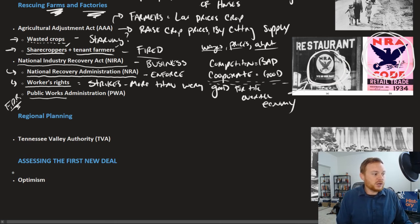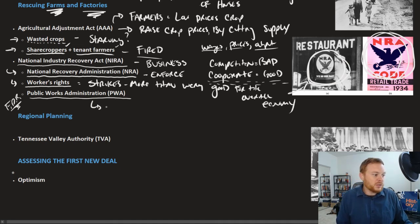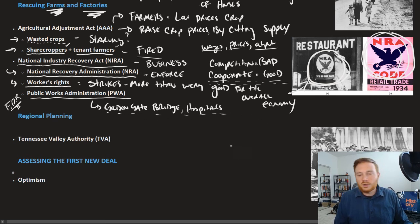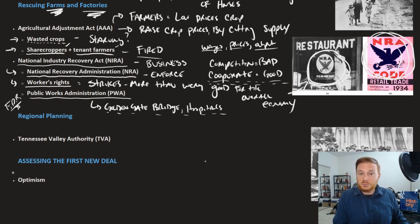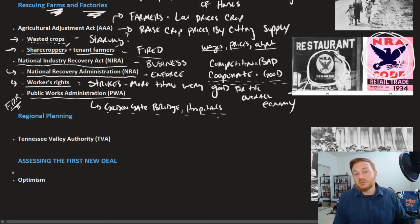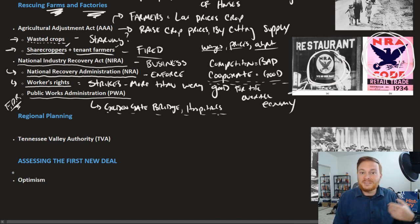The NIRA also included a Public Works Administration, or PWA — another work program. Things like the Golden Gate Bridge in San Francisco were built as part of this, along with hospitals and various other public works. The idea was to put people to work right away, put money in their pockets so they could buy things, but also serve as investments. The Golden Gate Bridge, hospitals, roads — these would be an overall benefit to the economy. You pay now, and you get paid back later.